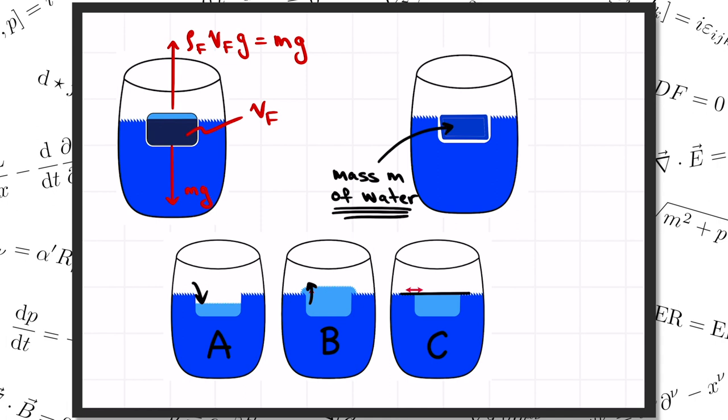But that's exactly how much water would have fit in the region that the ice originally displaced. So the ice melts and it perfectly fills in the hole it had made with the same mass M of water. The water level does not change.